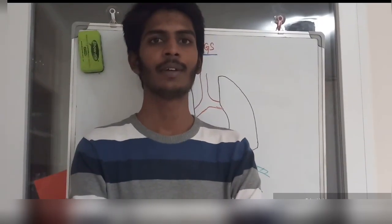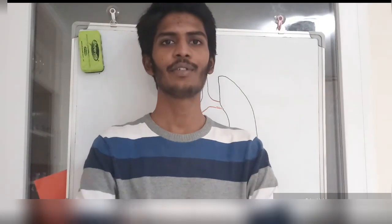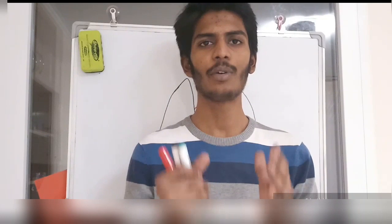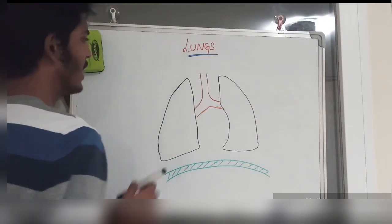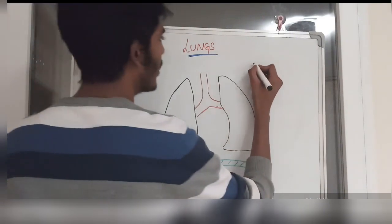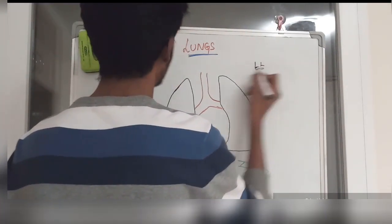Today we'll discuss the anatomy of the lungs. Lungs are located in the thoracic cavity. We have two lungs — one is the left lung and one is the right lung. We will discuss the anatomy of both lungs.